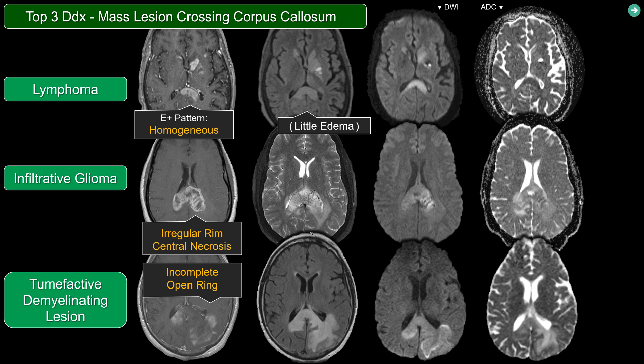As for lymphoma or infiltrating GBM, any type of hypercellular tumor will have restricted diffusion associated with the enhancing portion of the viable tumor. For demyelinating lesions, you can see restricted diffusion along the advancing enhancing border, whereas centrally they tend to present with T2 shine-through.